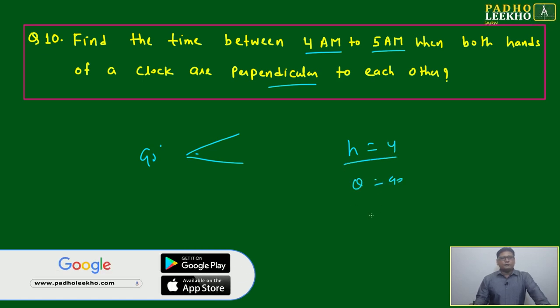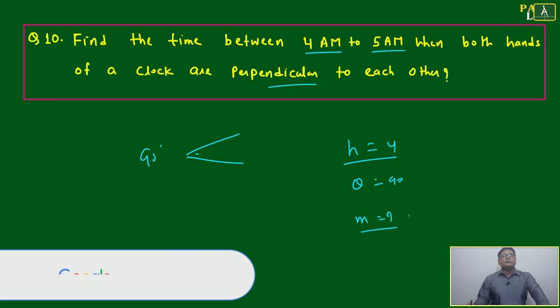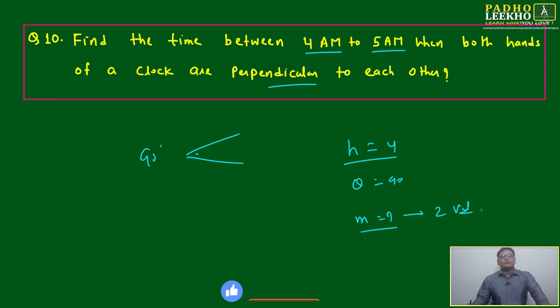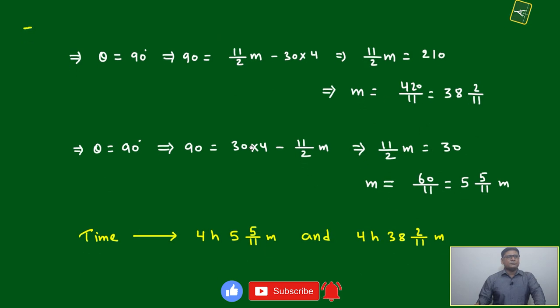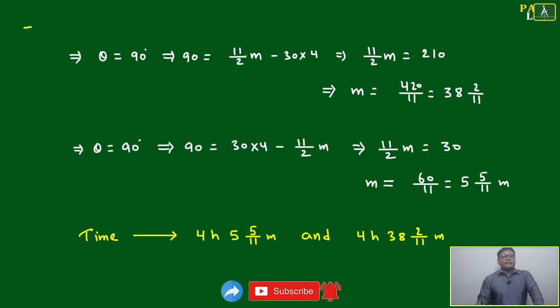h equals 4, theta equals 90. We have to calculate the value of minutes. This will come to value based on 11 by 2 m greater than 30h or 11 by 2 m is less than 30h. Just a simple calculation: theta 90 equals 11 by 2 m minus 30 into 4, this is 38 into 2 by 11, and theta 90 equals 30 into 4 minus 11 by 2 m, this is 5 into 5 by 11.